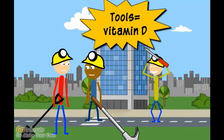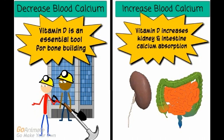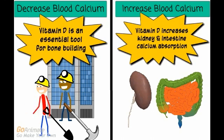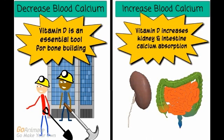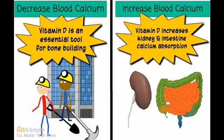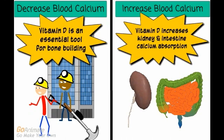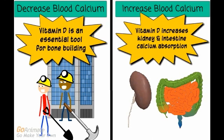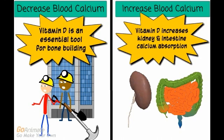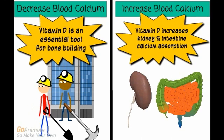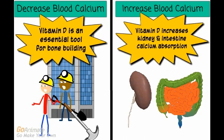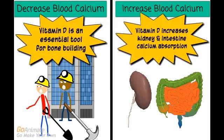You may be thinking: I thought vitamin D was a tool used to help build bone — and this is correct. Vitamin D is an essential tool for bone building, and bone building involves taking calcium from the bloodstream and using it as the primary material to build bones, thereby decreasing blood calcium levels. But another role of vitamin D is to increase kidney and intestine calcium absorption, meaning more calcium is absorbed instead of being flushed out through urine or stool, thereby increasing blood calcium levels. So vitamin D serves two completely different functions: one that decreases blood calcium levels and one that increases blood calcium levels.